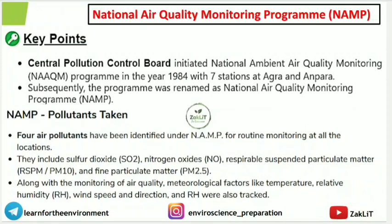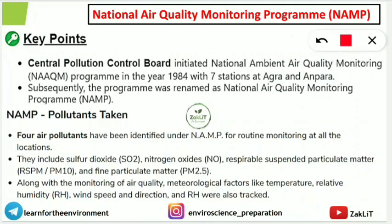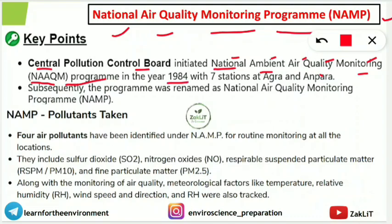The full form of NAMP is National Air Quality Monitoring Program, and it was initiated by the Central Pollution Control Board. Its predecessor program was NAAQM — National Ambient Air Quality Monitoring Program — which began in 1984 with seven stations at Agra and Anupara. Subsequently, the program was renamed to NAMP, so NAAQM can be considered the father program.